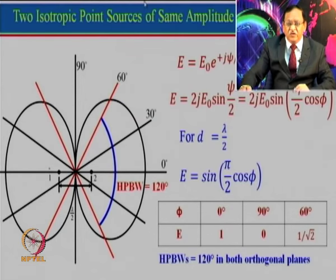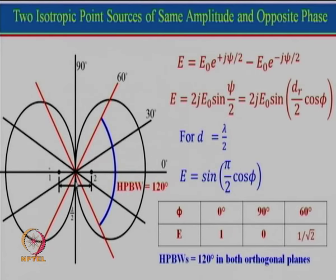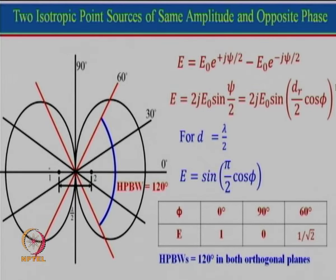Now let us take another case where the two antennas are of the same type but fed with opposite phase — one fed with amplitude A and the other with −A, which is a 180° phase shift — and again symmetrical with respect to the origin. The first element gives e₀ × e^(+jψ/2) and the second element, having negative amplitude, gives a negative term. Combining these two, instead of cos(ψ/2) the term now becomes sin(ψ/2), which can be further expanded by substituting ψ = (D/2)cosφ.